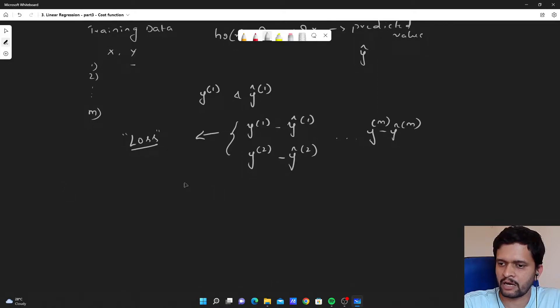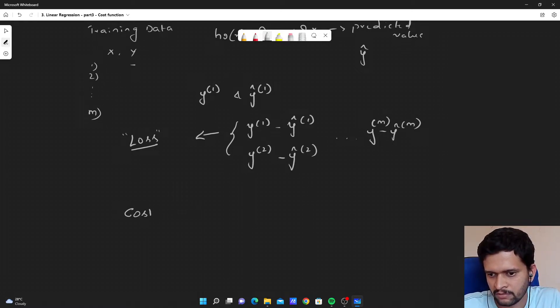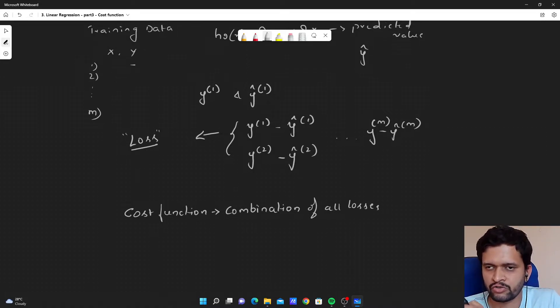For cost function, we combine all of these losses together and take the average of it. That we call it as cost function, which is the combination of all losses. Losses of individual training examples combined together will provide us the cost function.